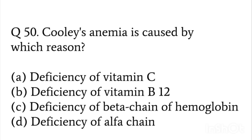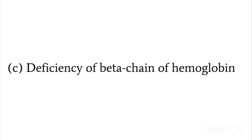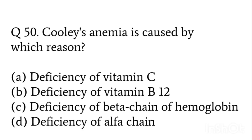Cooley's anemia is caused by: deficiency of vitamin C, deficiency of vitamin B12, deficiency of beta chain of hemoglobin, or deficiency of alpha chain. The answer is deficiency of beta chain hemoglobin. Cooley's anemia is named after the doctor who discovered this deficiency of beta chain in hemoglobin — it is a type of thalassemia due to deficiency of the beta chain in the hemoglobin structure.